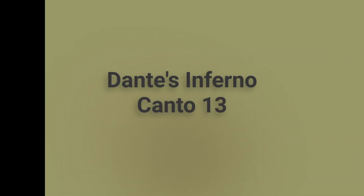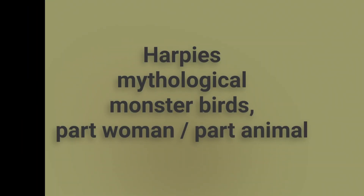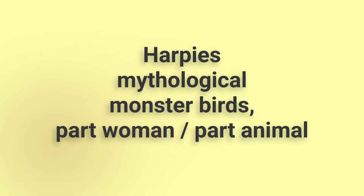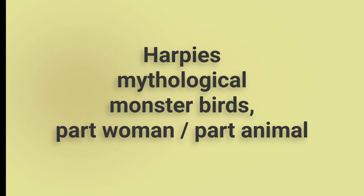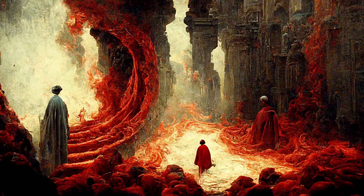Let's experiment with colors in MidJourney. We will use a line from Dante's Divine Comedy, Canto 13 of Inferno, where the poet talks about the harpies — mythological monster birds, part woman and part animal. Their wings are wide, their necks and faces human, their feet are taloned, their great bellies feathered. They utter their laments on the strange trees. The entire Divine Comedy is full of incredible imagery.